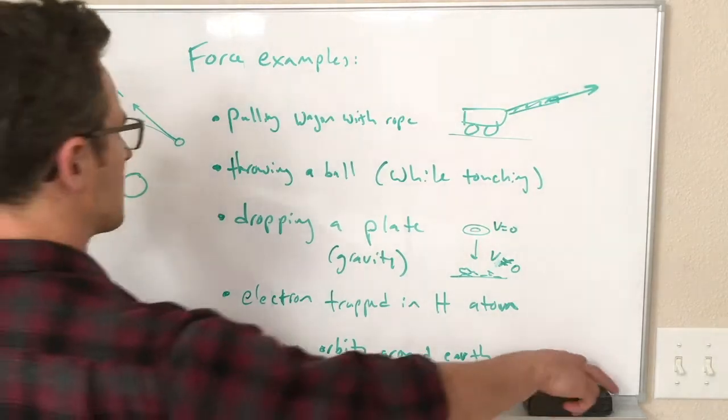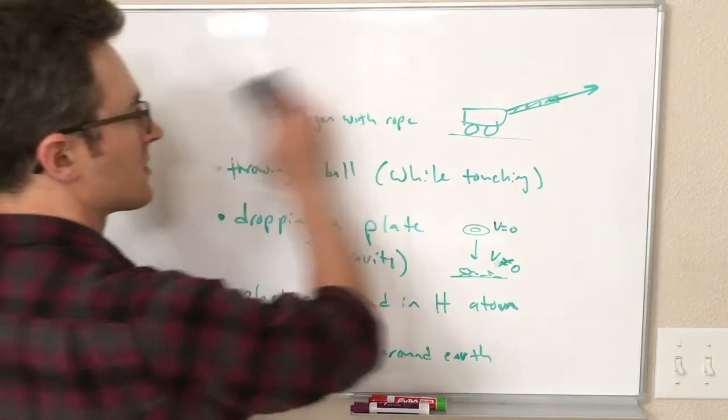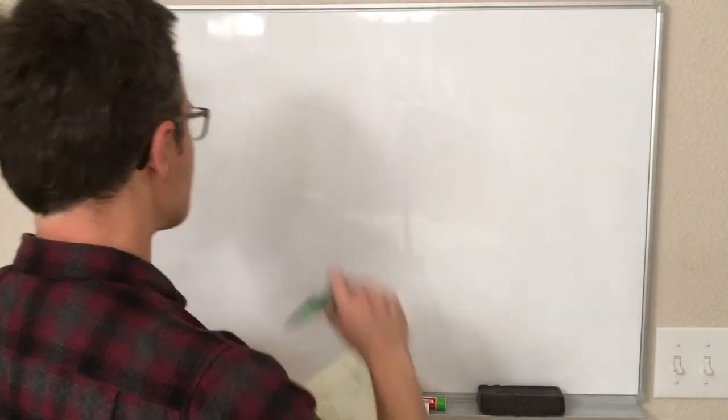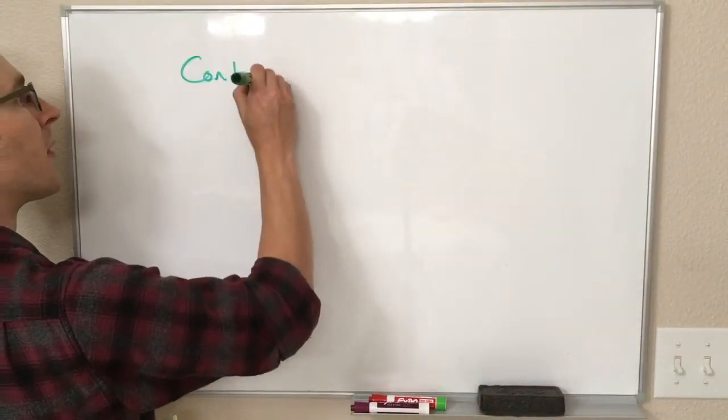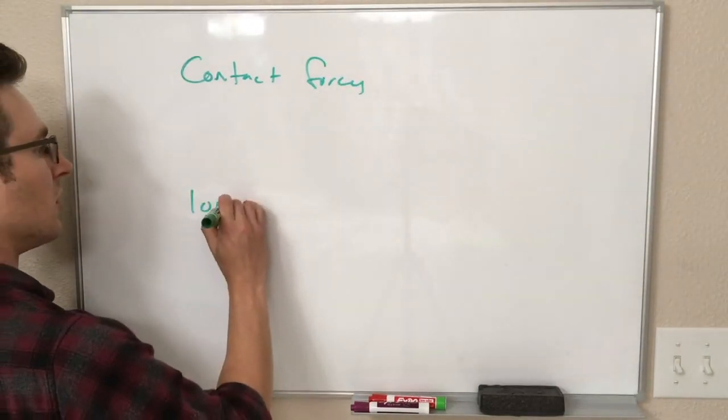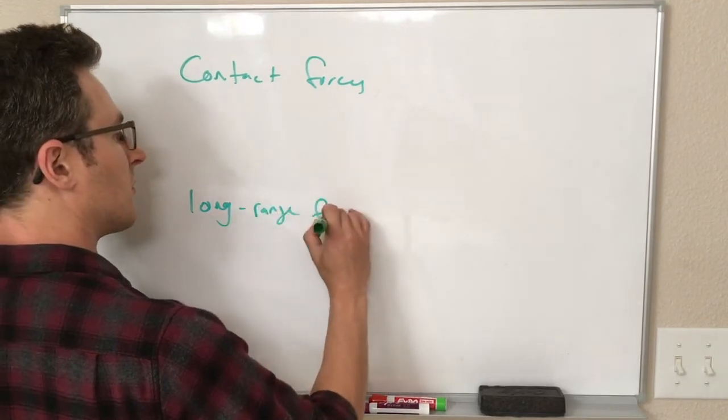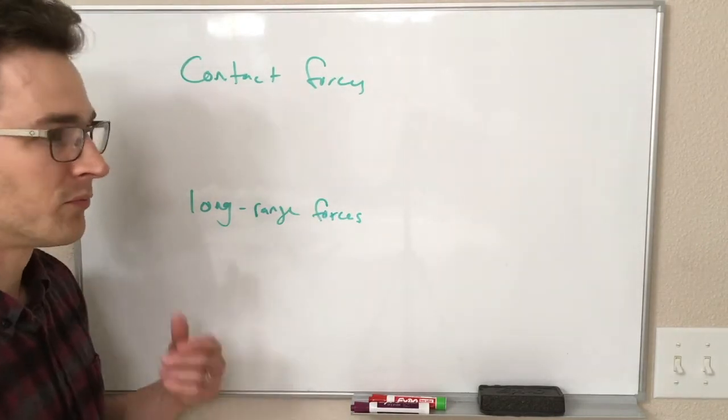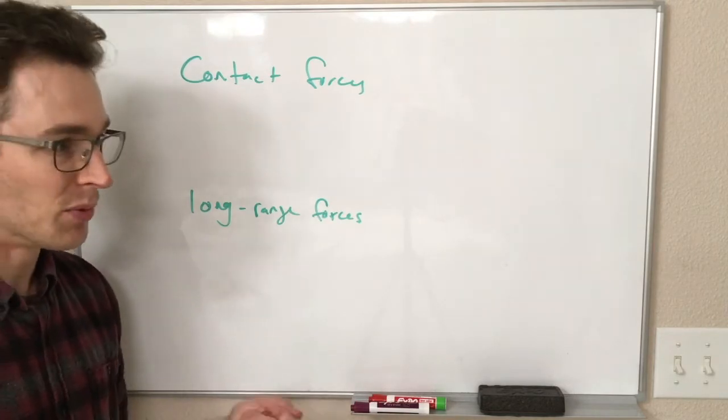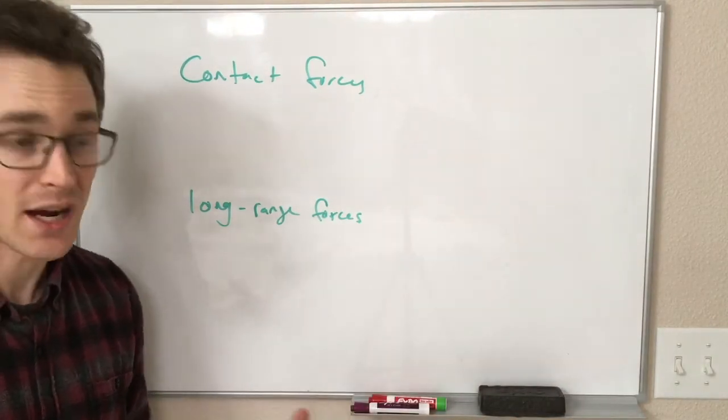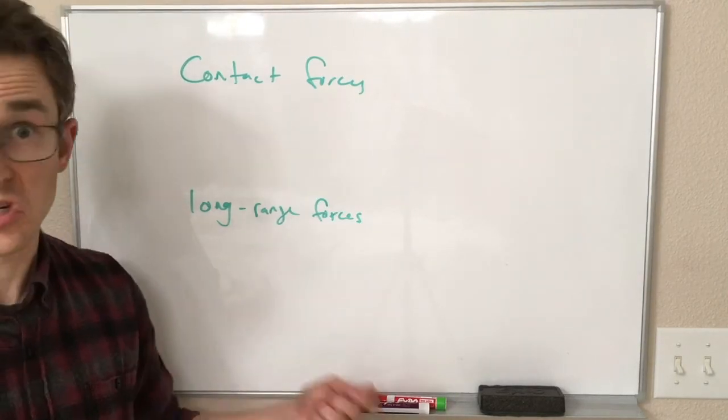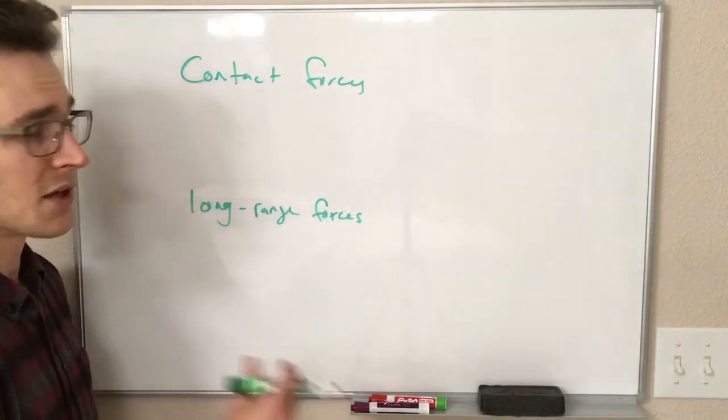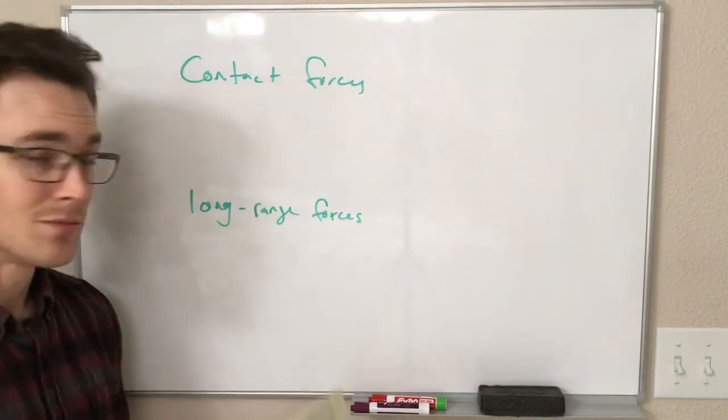We can kind of sort these different interactions into two categories, and again, we'll have more to say about this later, once we start talking about specific forces. But right now, we can at least talk about contact forces versus long-range forces. So contact forces are those that require something to touch the object. So, of the examples I gave before, like pulling on the rope, while I'm touching the rope and the rope is touching the wagon or whatever, so that's a contact force. The rope is pulling on it where it is touching it, right? Throwing the ball, that's, you know, I'm pushing on the ball with my hand, so I'm in contact with the ball. I can't throw a ball without something touching it.